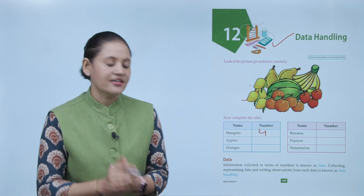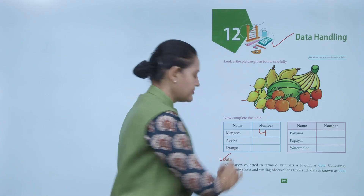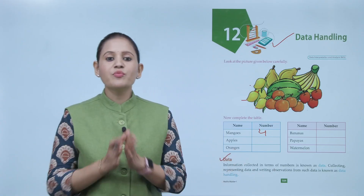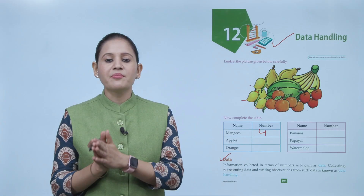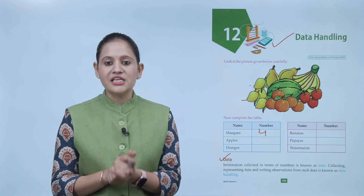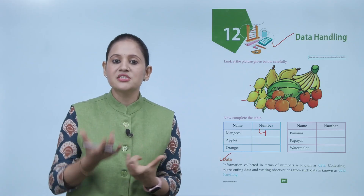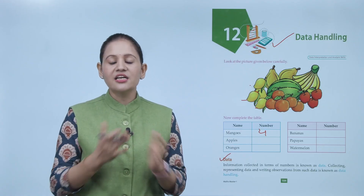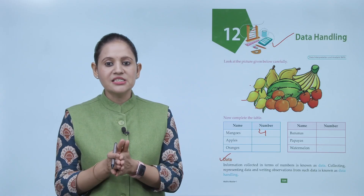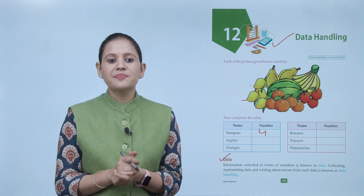Next is data. So what is data? Information collected in the form of numbers is known as data. Kisi bhi chiz ke baare mein jo information hai, jisko number ki form mein collect karte hain — that is known as data.